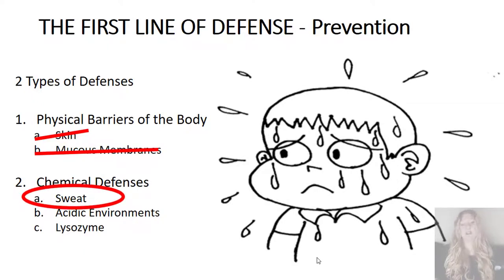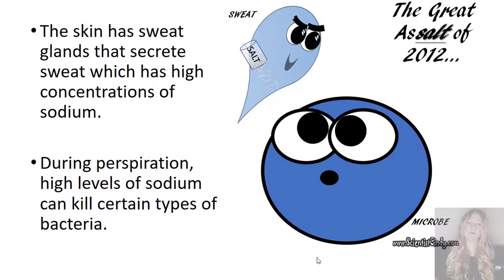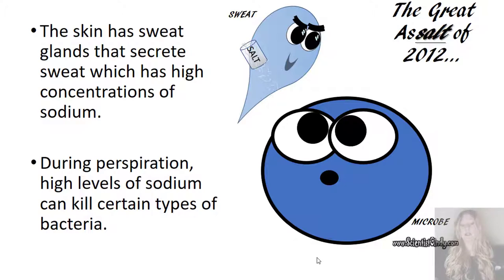We can talk about the chemical barriers or chemical defenses we have on the outside of the body. We sweat. The skin has sweat glands. They secrete sweat and it has a high concentration of sodium. During perspiration, high levels of sodium can kill certain types of bacteria.